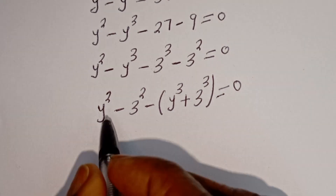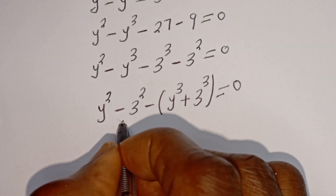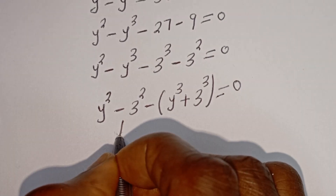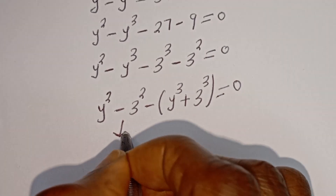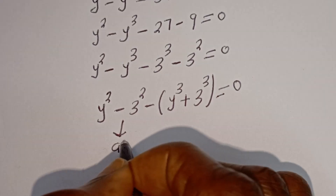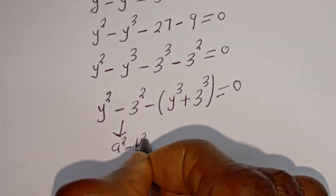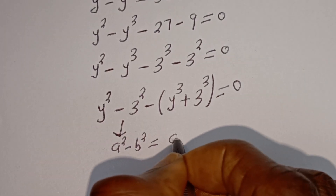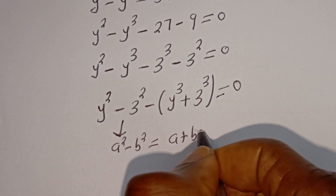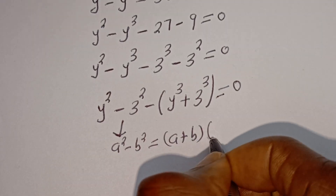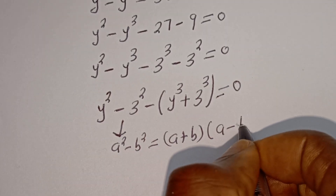If you look at y squared minus 3 squared, this is in the form of a perfect square difference. That is, if you have a squared minus b squared, this is equal to a plus b, bracket, a minus b.